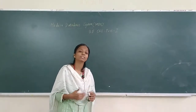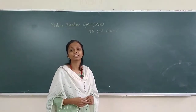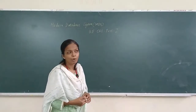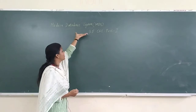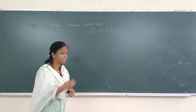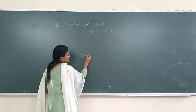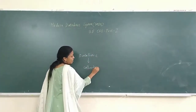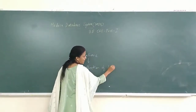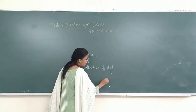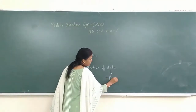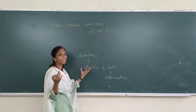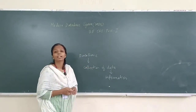Before starting the actual content, I will give you an overview of what this subject is all about. Modern Database System has the word database in its name. What is a database? Database is a collection of data. What is data? Data is information. Any information you collect is called data, and when you gather a lot of data it becomes a database.